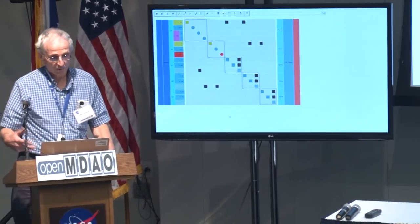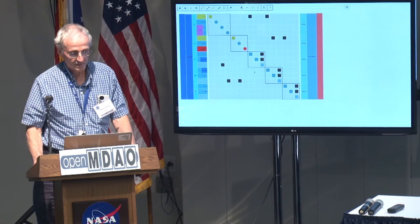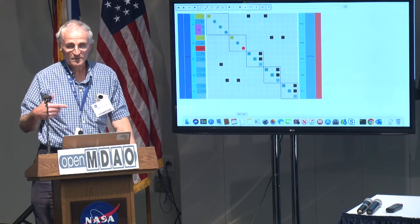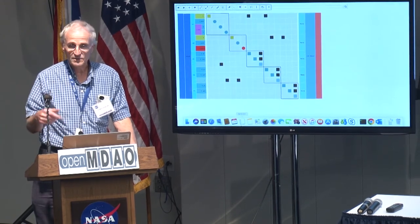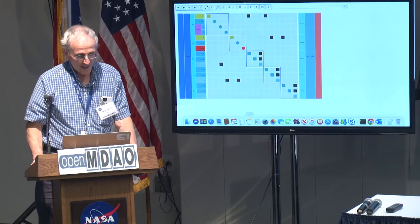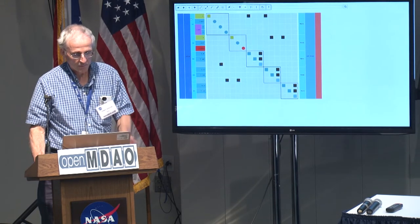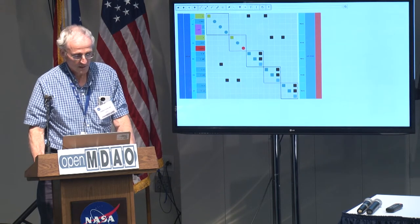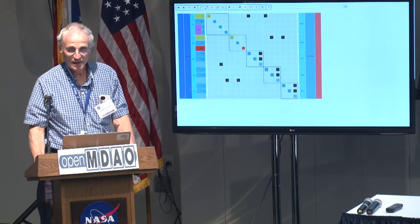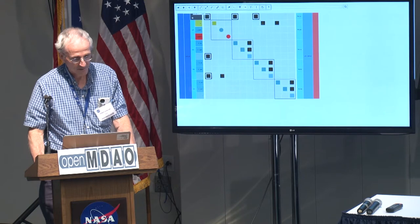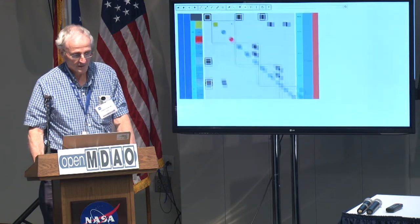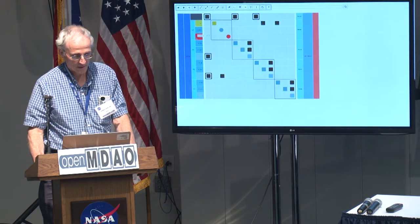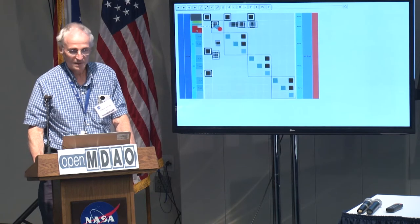One of the many problems is that right now we're using the left click and the right click to do different things, and we have other ideas for other things, but we've only got left click and right click — so how do we get past that? This is the way it works now: left click does all the zooming, and right click you can use to do the collapsing and expanding.